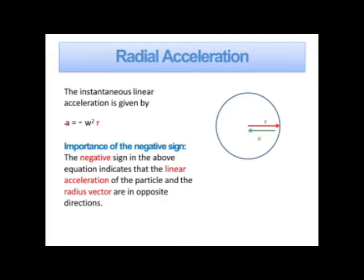Now we will discuss radial acceleration. Whenever a particle performs circular motion, due to continuous change in its velocity, acceleration is produced, which is always directed towards the center. That is called radial or centripetal acceleration. Since this acceleration is always directed towards the center while the radius vector is directed from inside to outside, it can be related as a = minus omega squared r. The negative sign shows that this acceleration and r are directed in opposite directions.